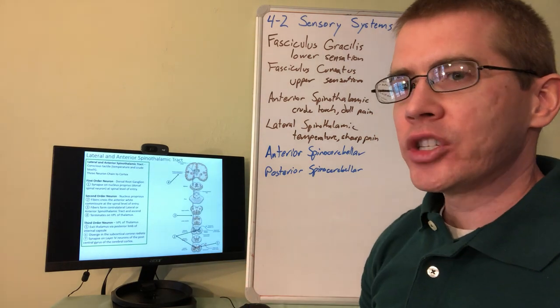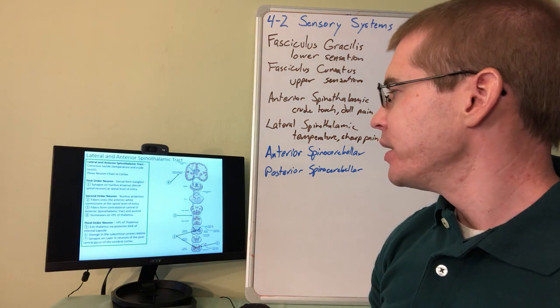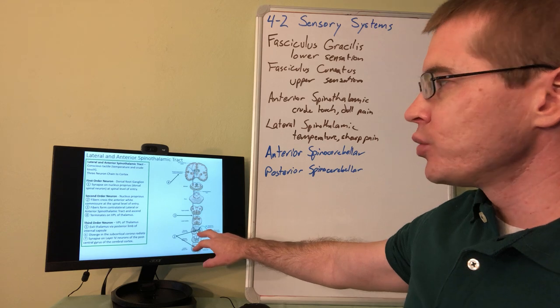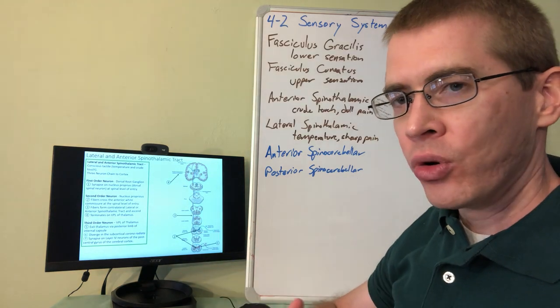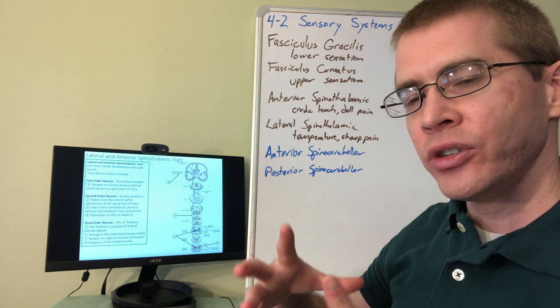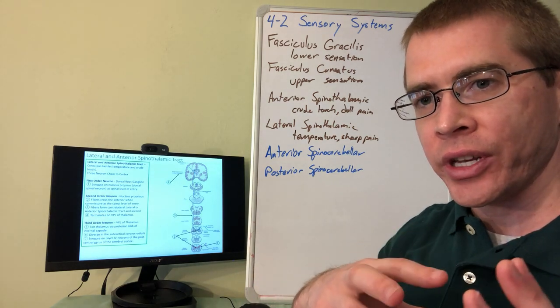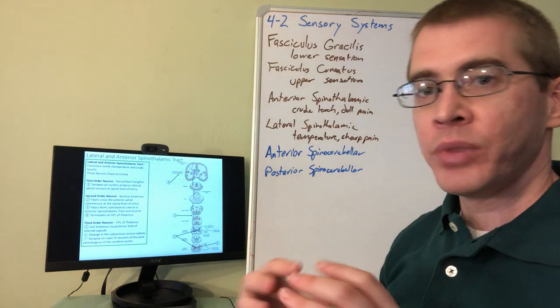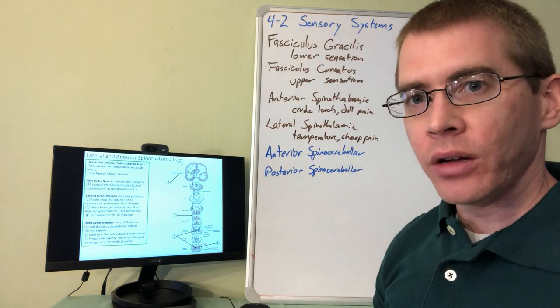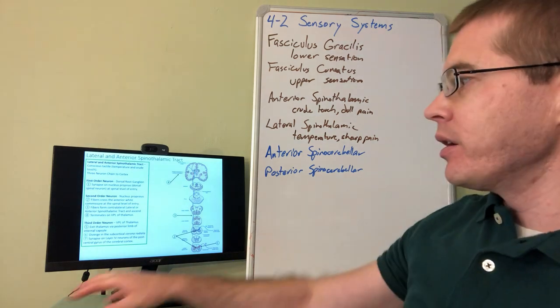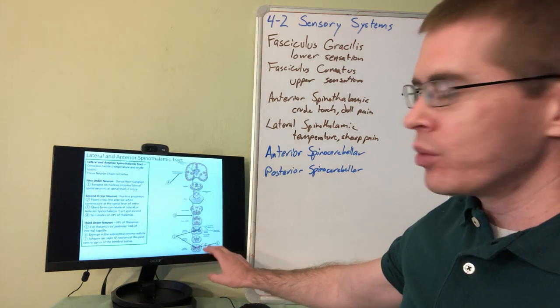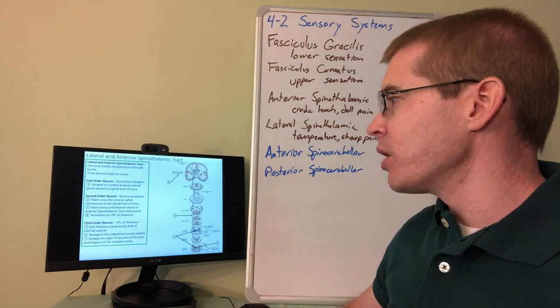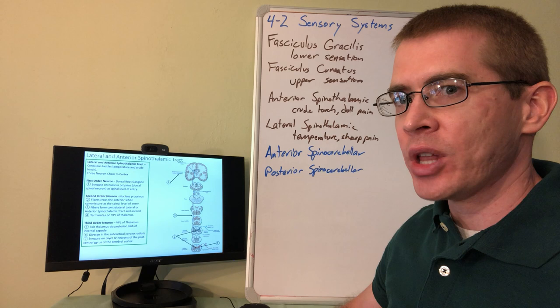So now we're talking about the spinothalamic tracts and again you can follow this information. Here we have the dorsal root ganglion and those will synapse in the dorsal horn. So the nucleus cuneatus and gracilis from those fasciculi, those are analogous to dorsal horn neurons but they're located in the medulla, in the brain stem. Here we're at the level of the dorsal horn so we're going to synapse in the dorsal horn in nucleus proprius primarily or perhaps substantia gelatinosa.